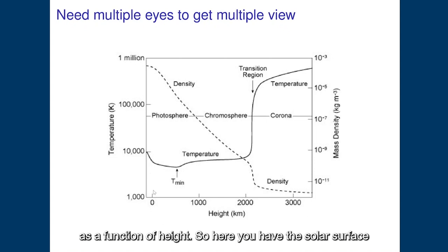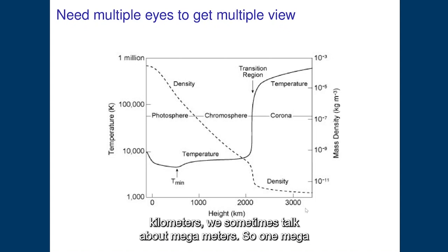So here you have the bottom of the solar surface and the bottom of the photosphere. And as we're going up in the atmosphere at a range here up to about three thousand kilometers, we sometimes talk about megameters, so one megameter is one thousand kilometers, so you're going from zero to three megameters here.